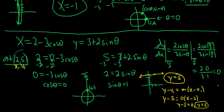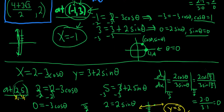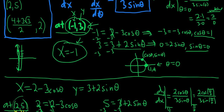Note that the point-slope formula only works for non-vertical lines, because m is the slope and vertical lines have undefined slope. That's what makes the first part such a good question — you have to think carefully about what's going on rather than just plugging into a formula.